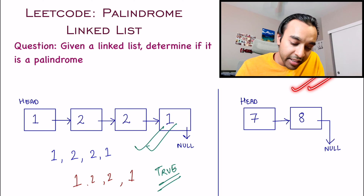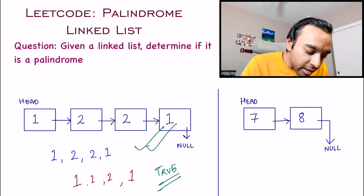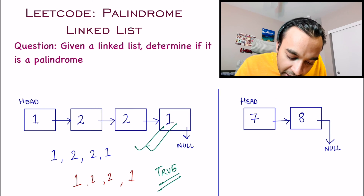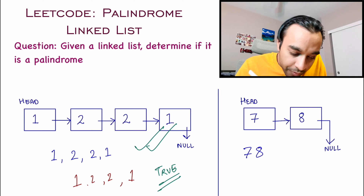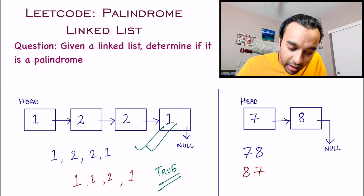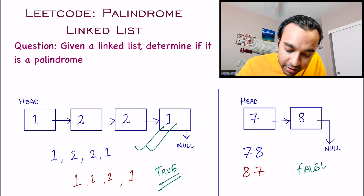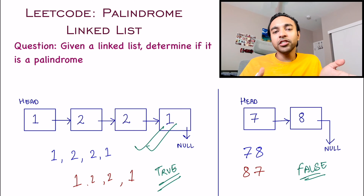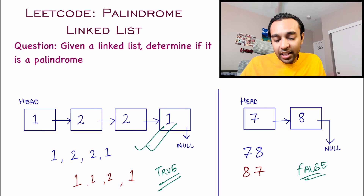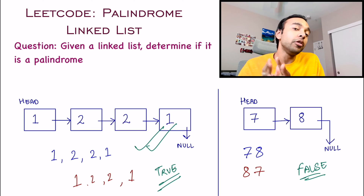Now let us look at our second test case. If you read this linked list from the head to the end, you get 7 and 8. But if you read it from the tail to the head, you get 8 and then 7. These are not the same, and hence in this test case you are going to return false as your answer. This was pretty straightforward. Feel free to try the problem on your own, or let us dive into the solution.